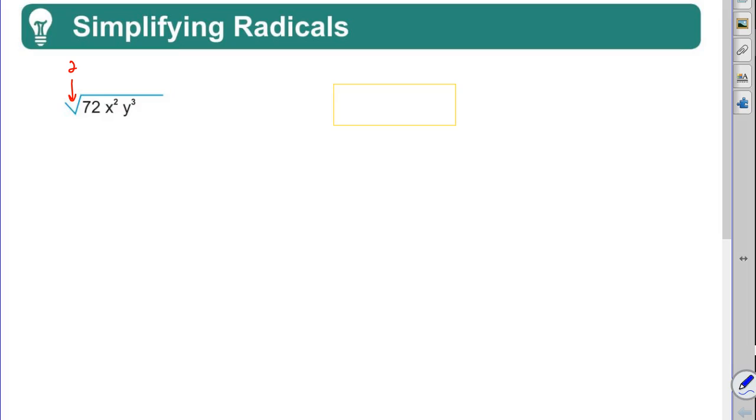Alright, so let's go ahead and factor our number here. We got a 72. Alright, so let's factor 72, and there's a lot of ways to skin the cat, but I'm just going to go 2 times 36. Now look at this 36.